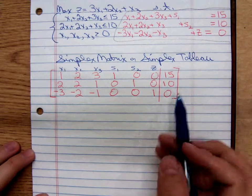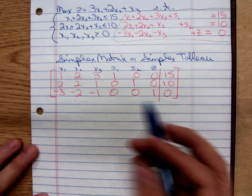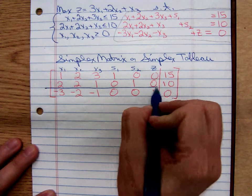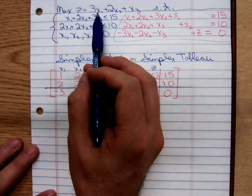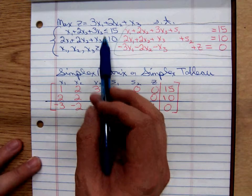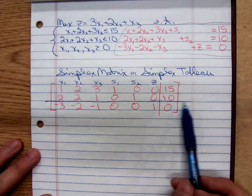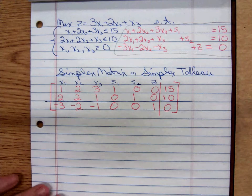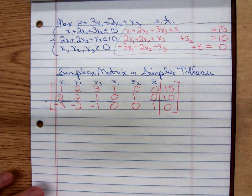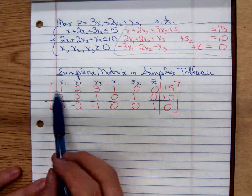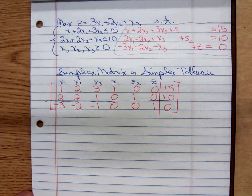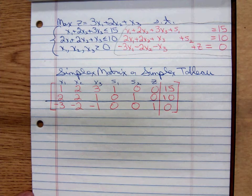And the numbers that are on the last row have a fundamental difference from those numbers above it. The numbers on the last row, they came about from the objective function. The other numbers, they came about from the inequalities. So I'm drawing a horizontal bar to indicate that we're separating the objective function from the constraints. And that's how you set up the simplex tableau.